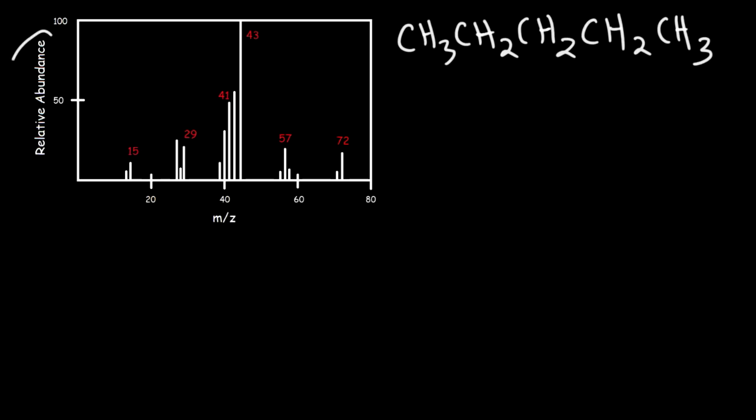In this graph on the y-axis we have the relative abundance of the fragments, which represents the quantity of the positively charged fragments that reached the detector. On the x-axis we have the mass to charge ratio. If we get a methyl cation, typically the charge will be plus one, so if Z is one then M over Z becomes the mass of the fragment.